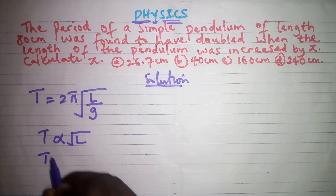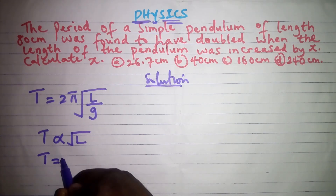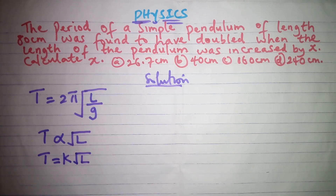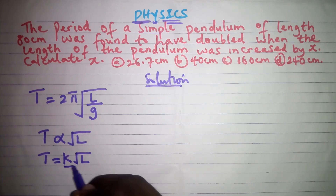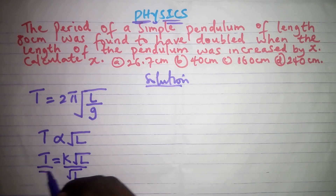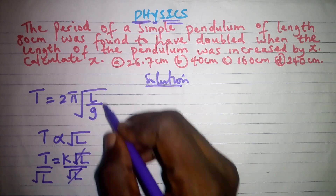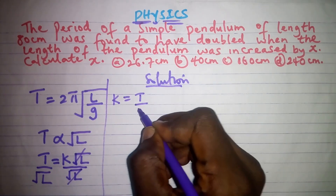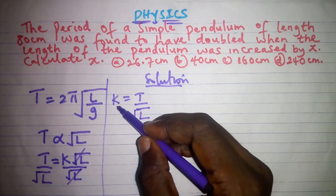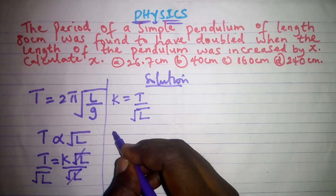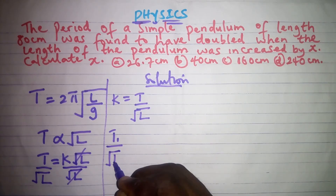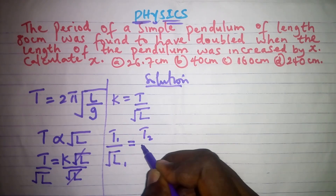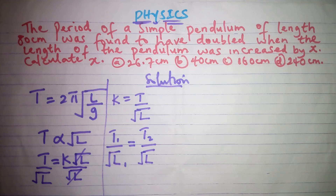Using the horizontal test, T is directly proportional to the square root of the length. Converting this to an equation, we introduce the constant k: T = k√L. We find the value of k by dividing both sides by √L, so k = T/√L. This ratio T/√L is our constant, which we duplicate as T1/√L1 = T2/√L2.